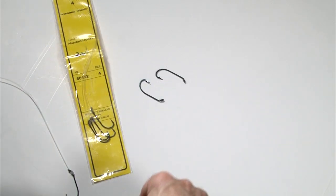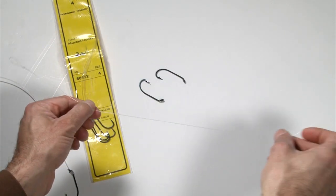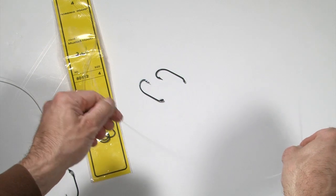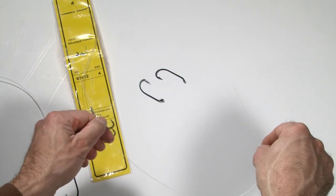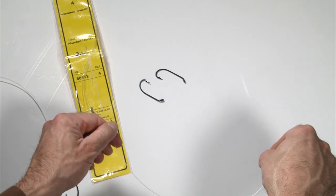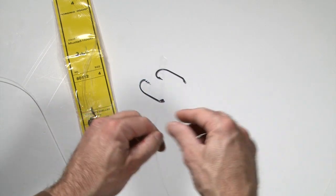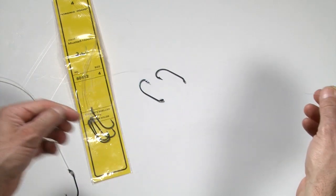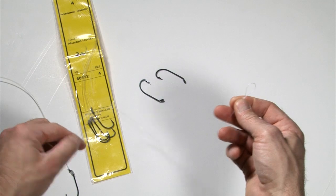First thing I like to do is cut down the leader material. I cut these down to about 14 inches. I'm going to make 12 inch snells so it gives me a couple inches for tying knots. Then you want to tie a loop on the end.